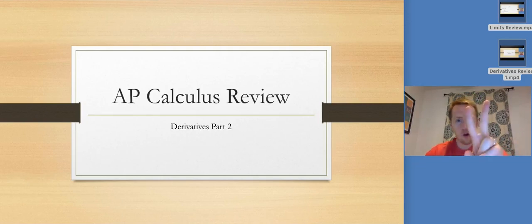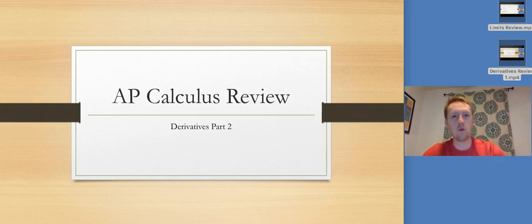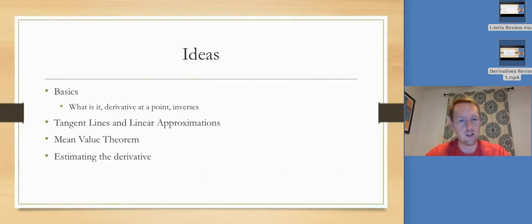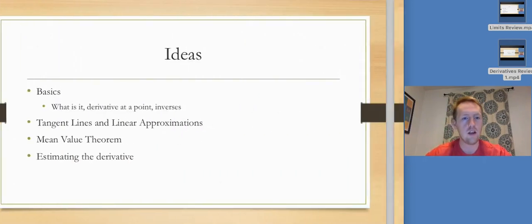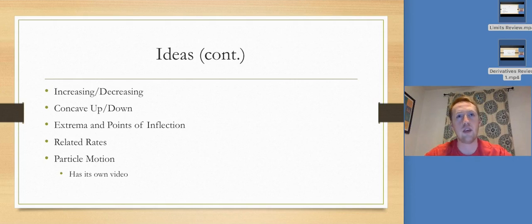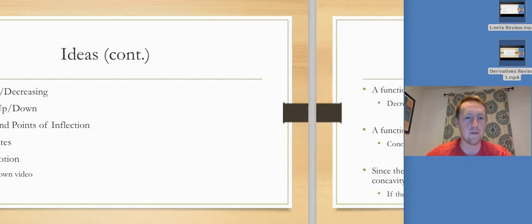Derivative part two — the sequel. We did some of this stuff already. Now we're going to move into graph ideas. We'll also do related rates, but I'm going to spend a lot of time talking about graphs and how f, f prime, and f double prime are all related.